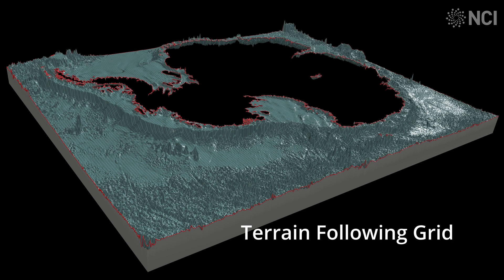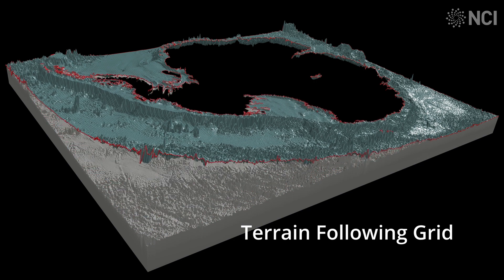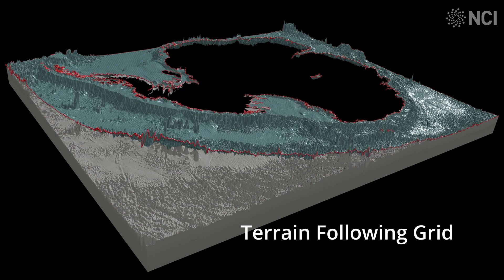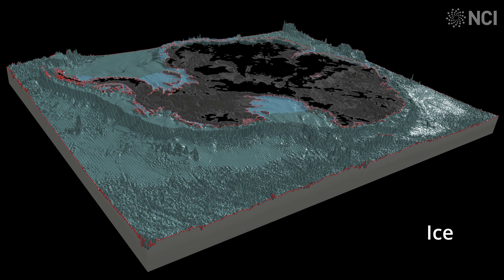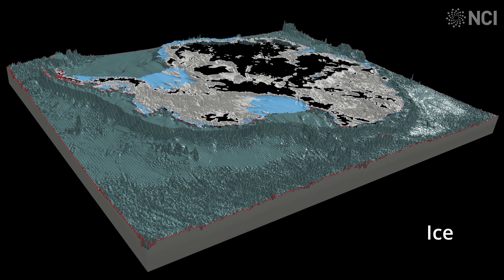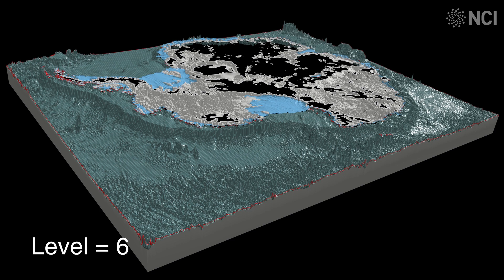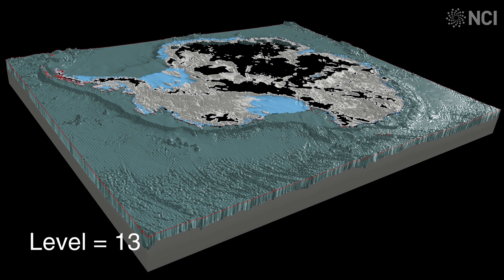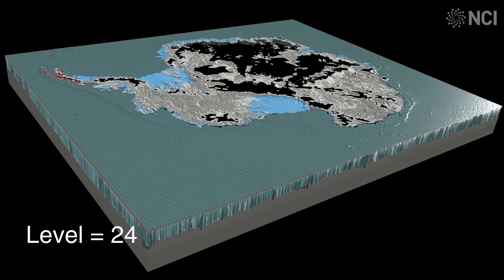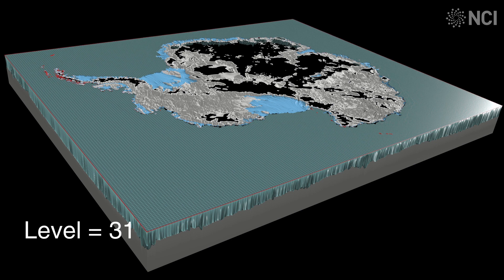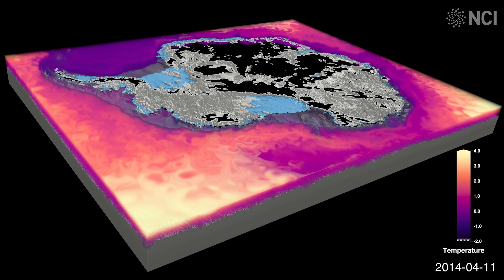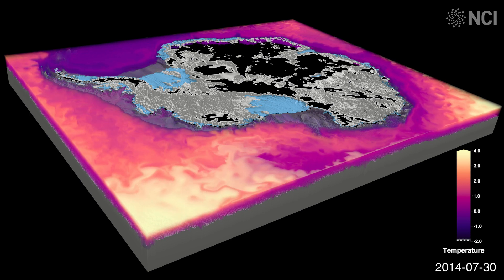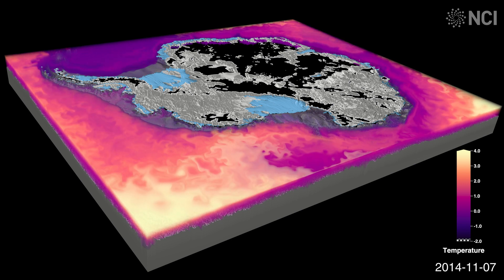To simulate interactions between the Southern Ocean and the Antarctic ice sheet, we separate the ocean into hundreds of millions of chunks. A special coordinate system accurately represents the terrain of the sea floor. Using one of the fastest supercomputers on Earth, provided by the National Compute Infrastructure at the Australian National University,